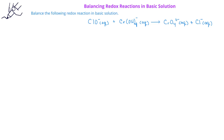In this problem, we're asked to balance the redox reaction below in basic solution. In this redox reaction, we have the hypochlorite ion, ClO⁻, reacting with chromium hydroxide ion to produce the chromate ion, CrO₄²⁻, and the chloride ion, Cl⁻.